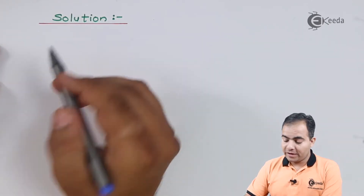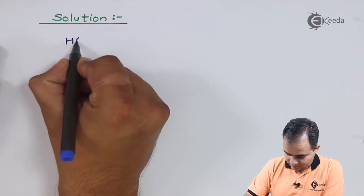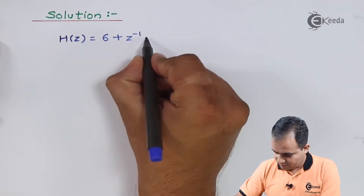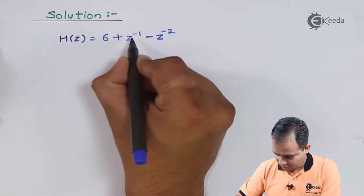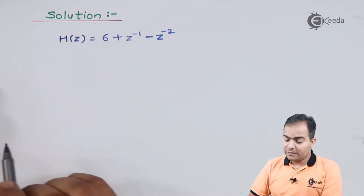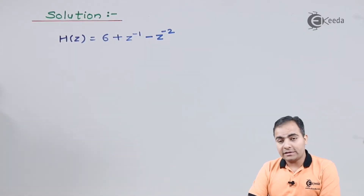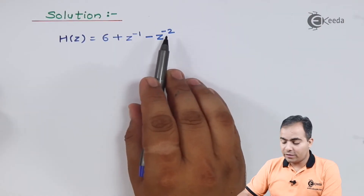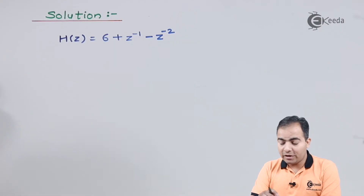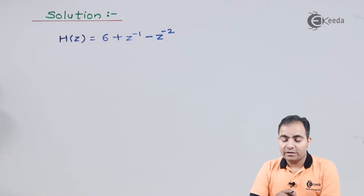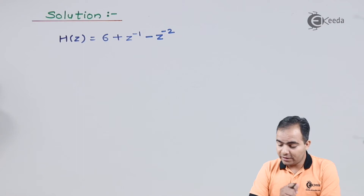The function H is 6 + z⁻¹ - z⁻². If you want, you can keep this equation as-is, or convert it into positive powers of z. The lowest power of z here is minus 2, so we multiply and divide the whole equation by z².